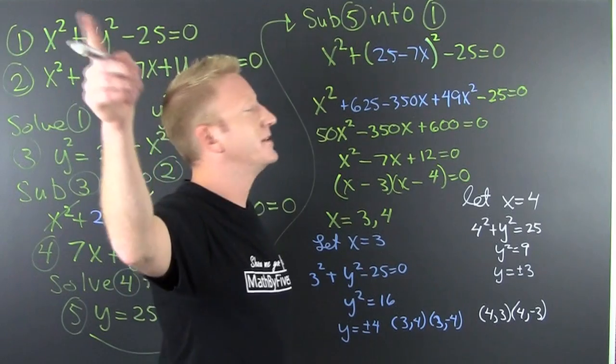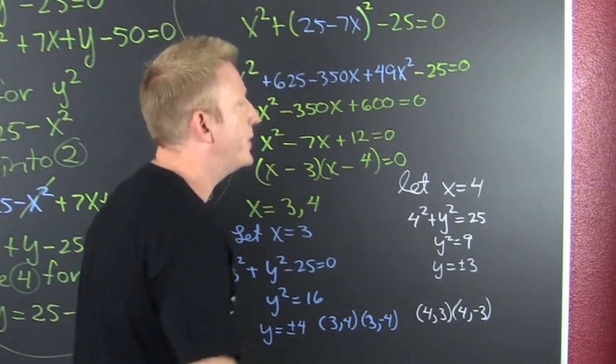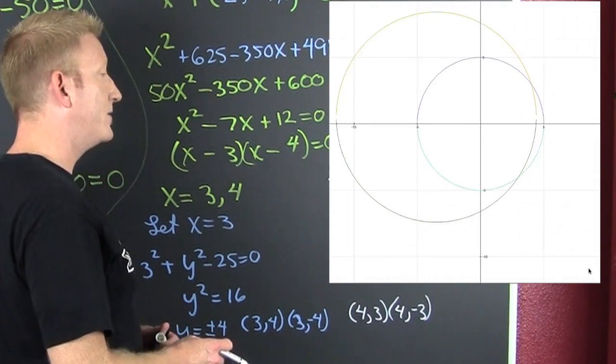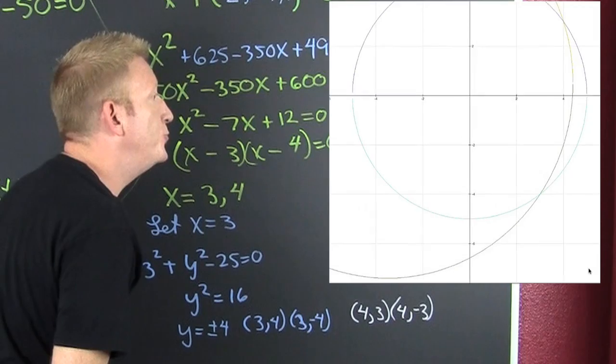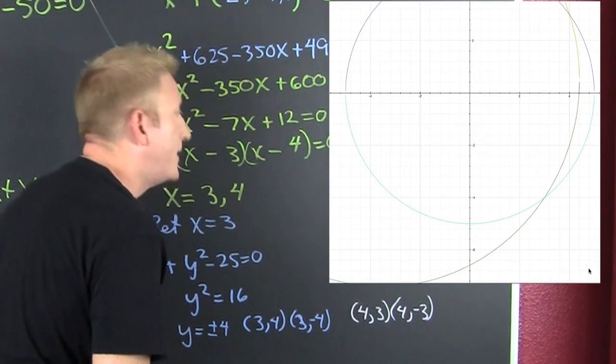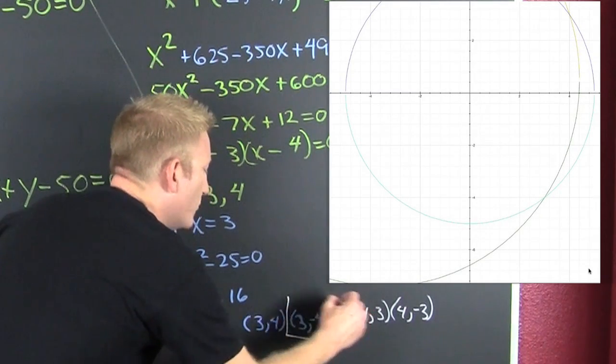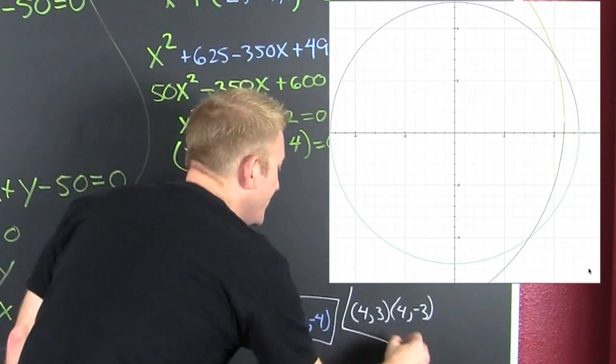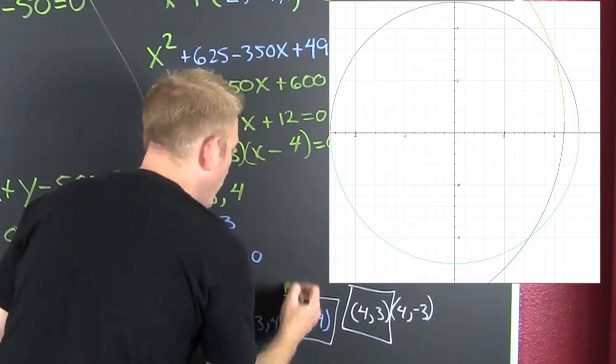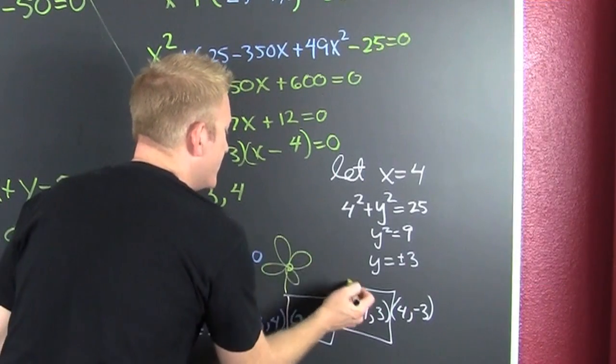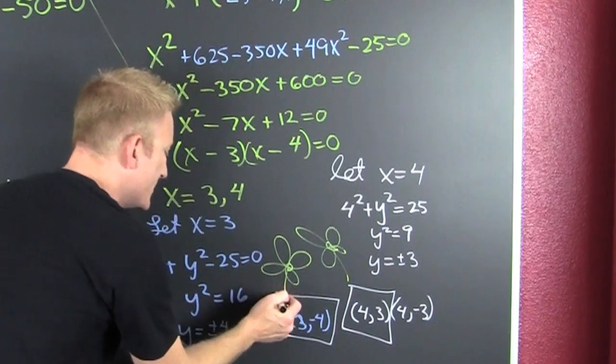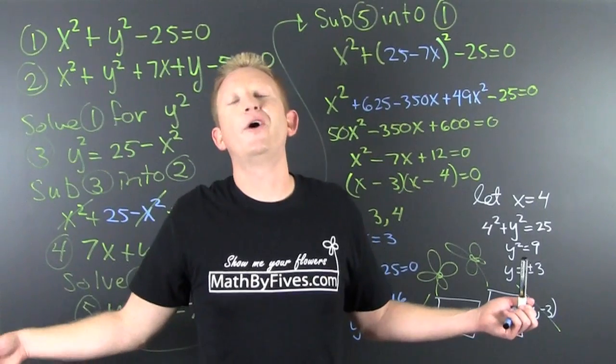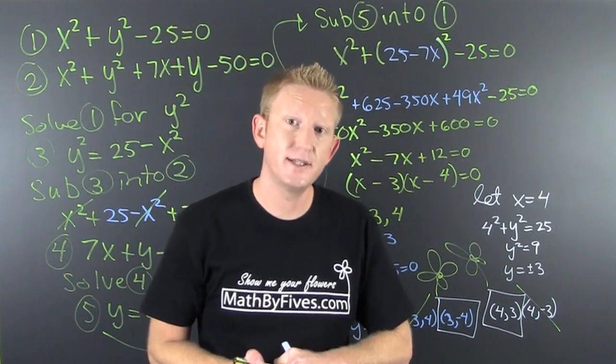We could take all those points and plug them back into the original and see which ones work, but two of them don't. Let's go to the graph. So here I graphed two things with my quick graph. I zoom in and I see (3,-4) is a real solution and I also see that (4,3) is a real solution. Those are the two that we want. The other two are extraneous, not a solution. And that was our major example for solving nonlinear systems.